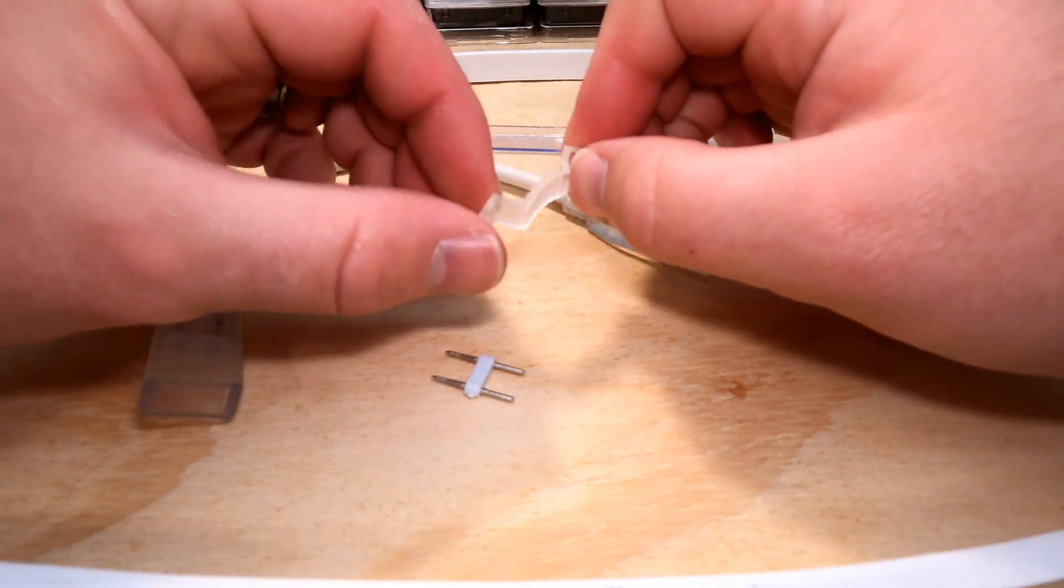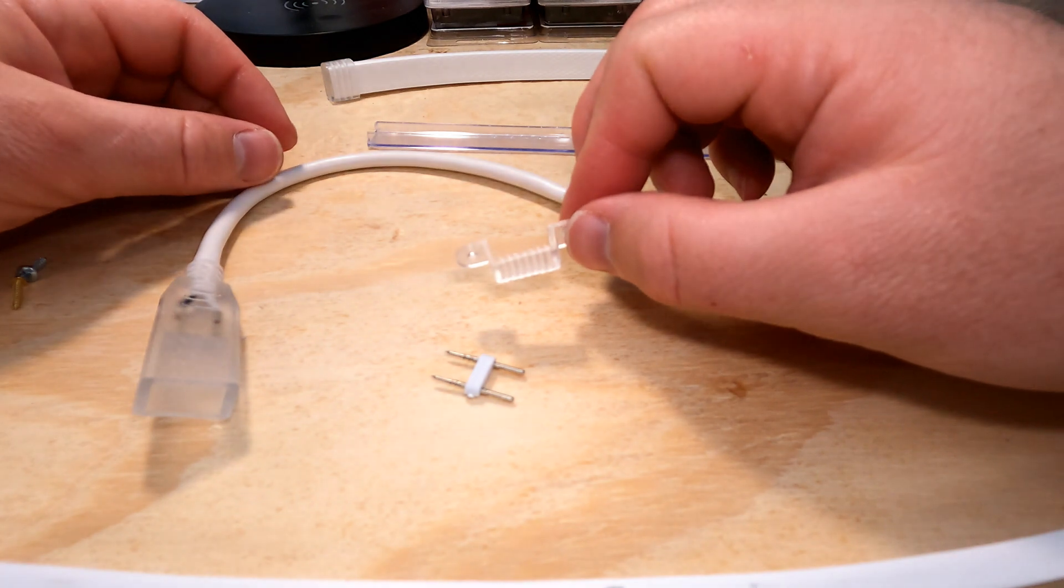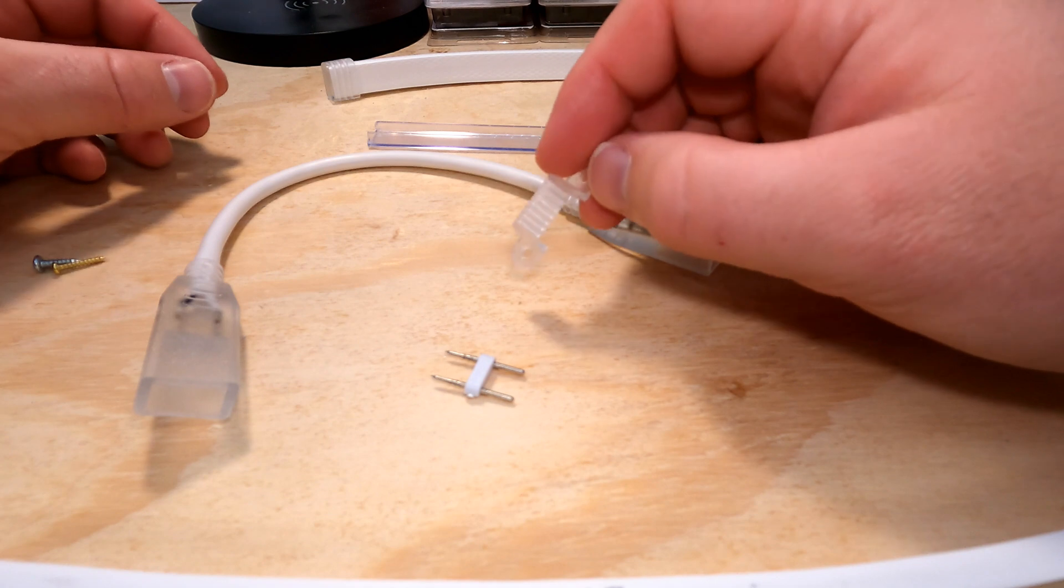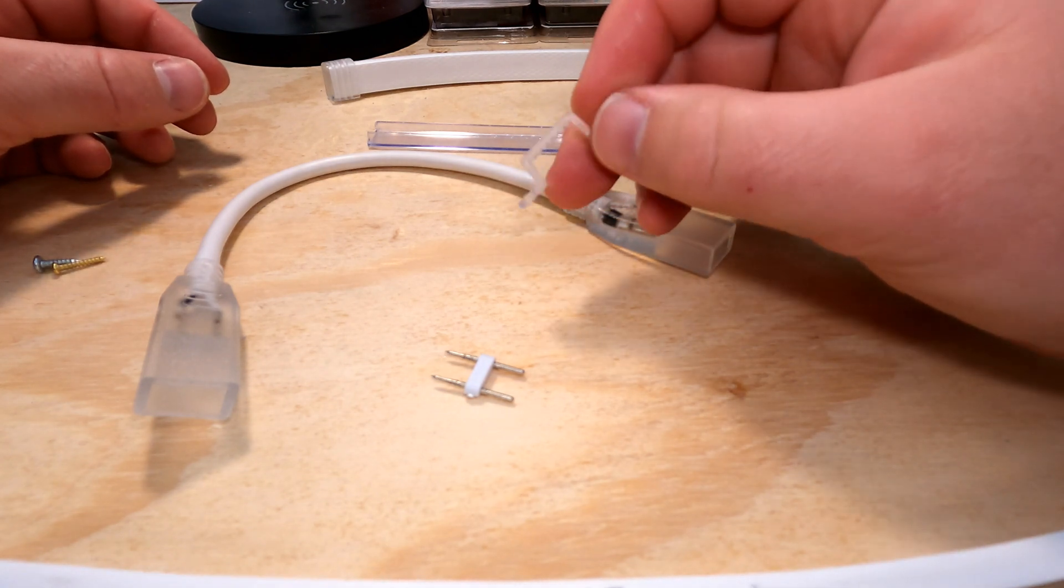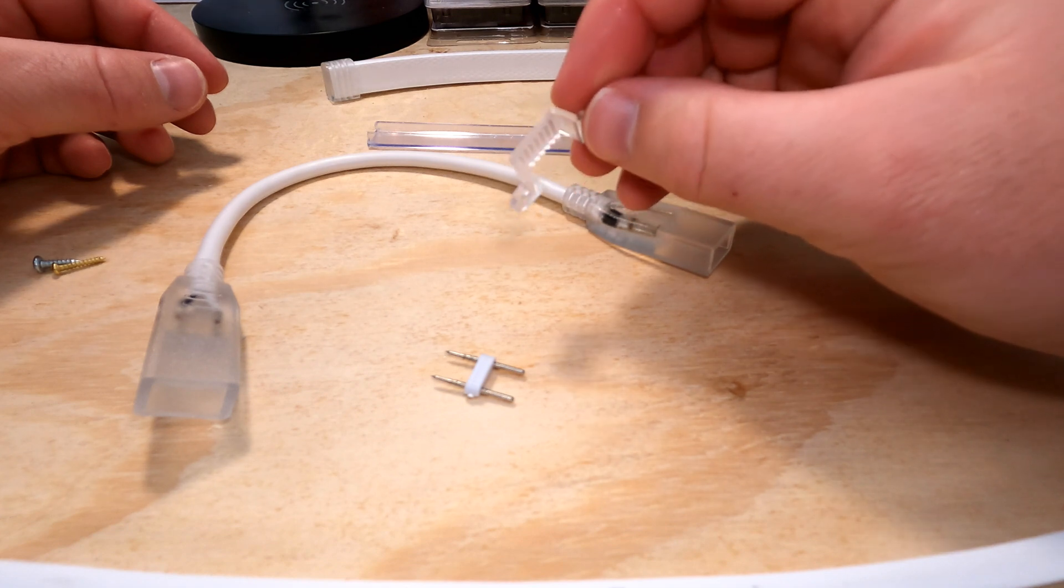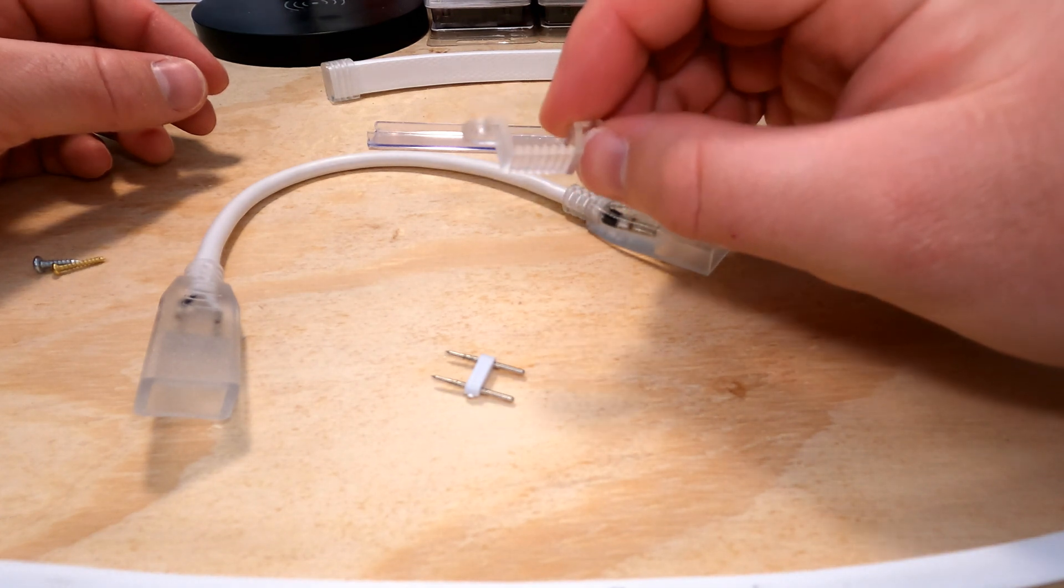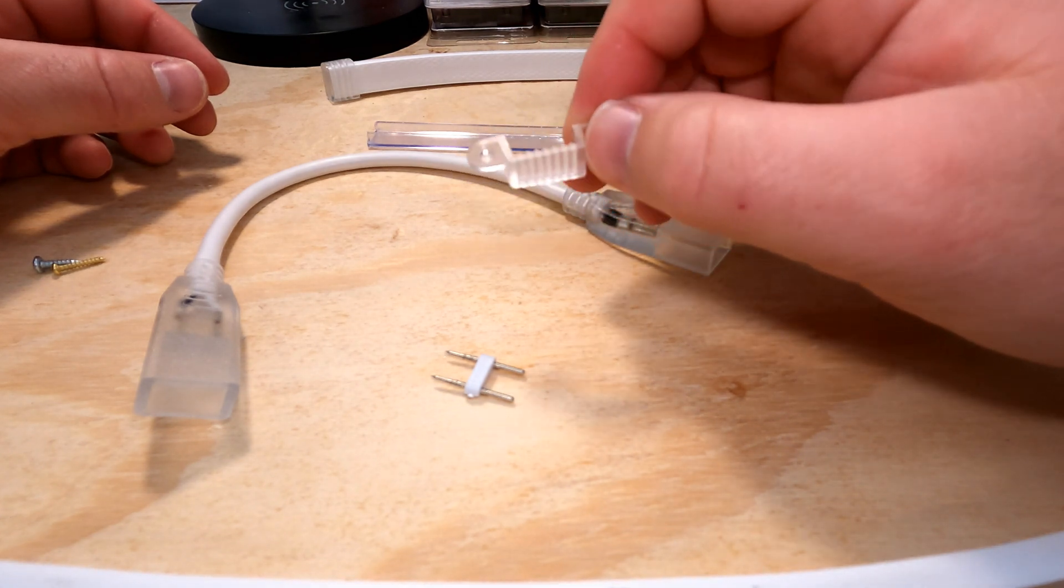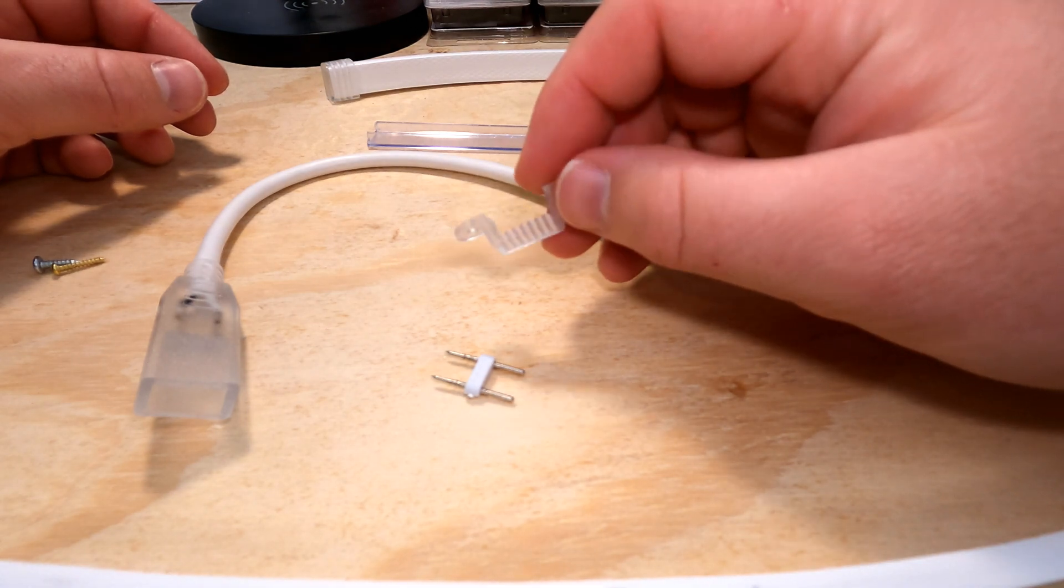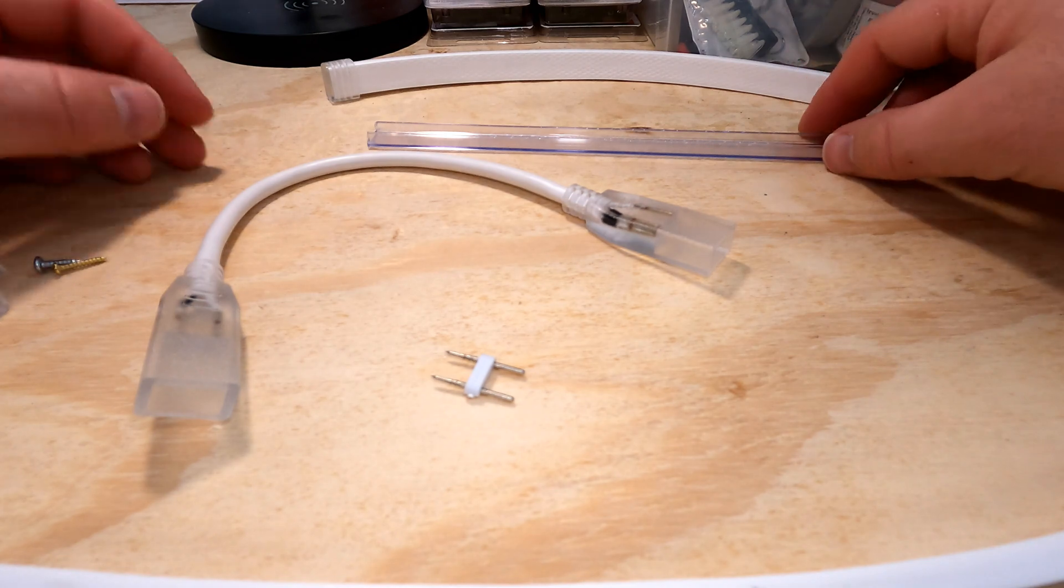but you do get a bunch of these when you order the lights. I think if you order a three foot length, you get two or three of these. If you order longer lengths you basically get one clip every three feet, I think is how they work. So you do get some, but honestly, I would kind of ditch those and look